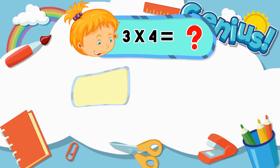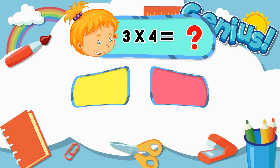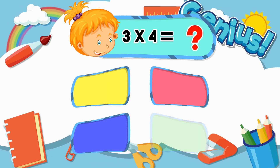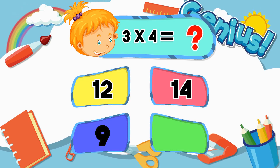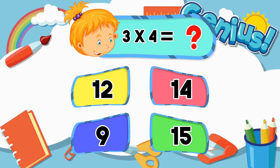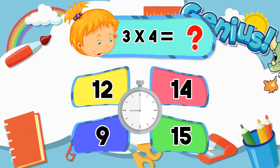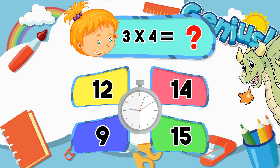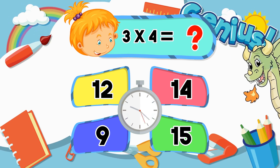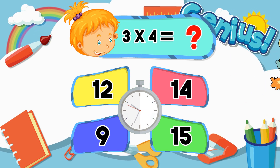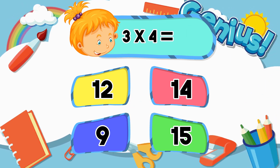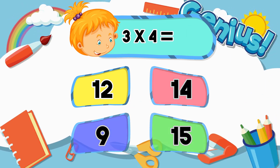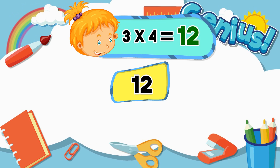What is 3 times 4? 12, 14, 9, 15. Answer: 12.